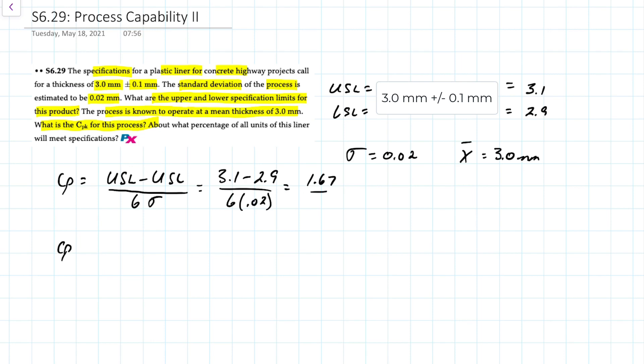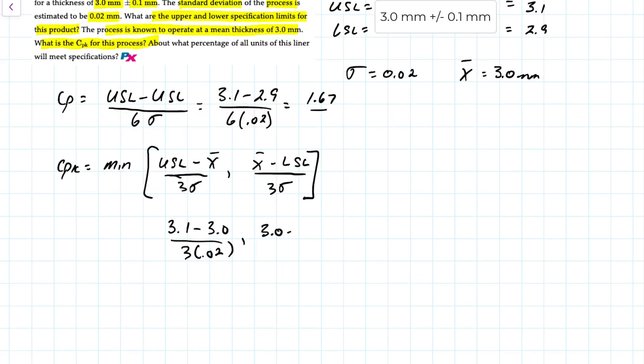The CPK is equal to the minimum of the upper specification limit minus X bar over 3 sigma, or X bar minus the lower specification limit over 3 sigma. The upper spec is 3.1 and the mean is 3.0 over 3 times 0.02. And the lower spec is 3.0 minus 2.9 over 3 times 0.02. The answer for both of these happens to be 1.67.